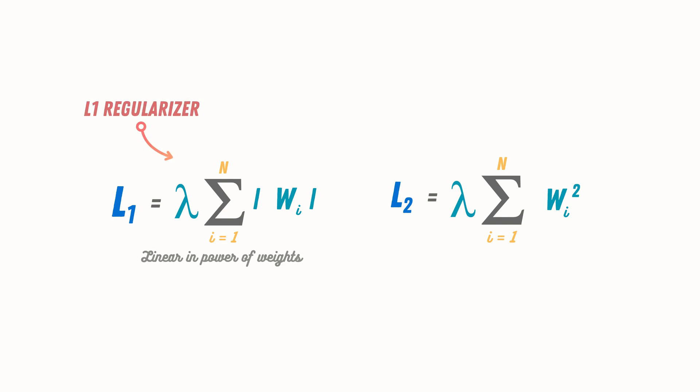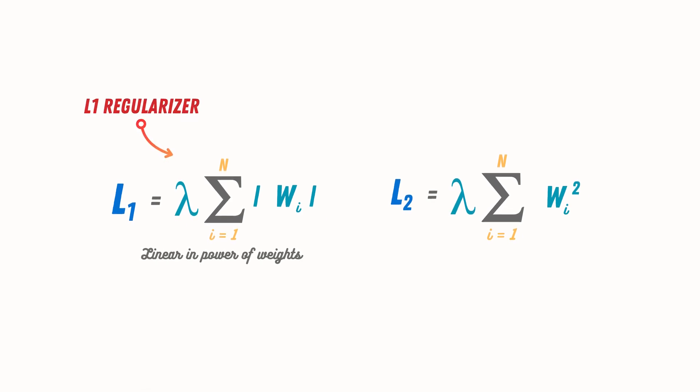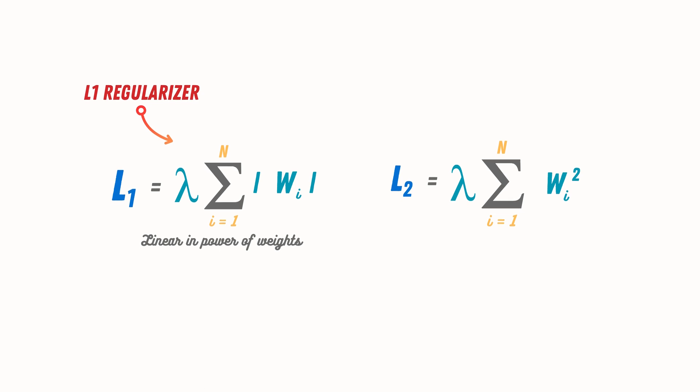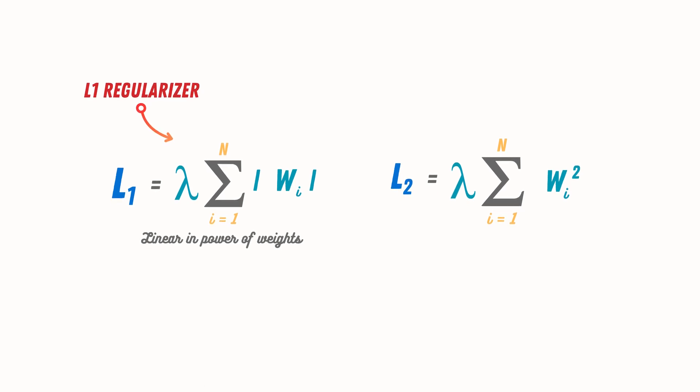The two most common types are L1 and L2 regularization. The L1 regularization is simply adding a linear power of weights with the loss function multiplied with a constant factor lambda, which controls the strength of the regularizer. This induces sparsity, making some weights exactly zero. It's useful when your data has many irrelevant features. For L2 regularization, we take the square of weights and add them in a similar way. This encourages smaller weights, preventing large fluctuations in the model.